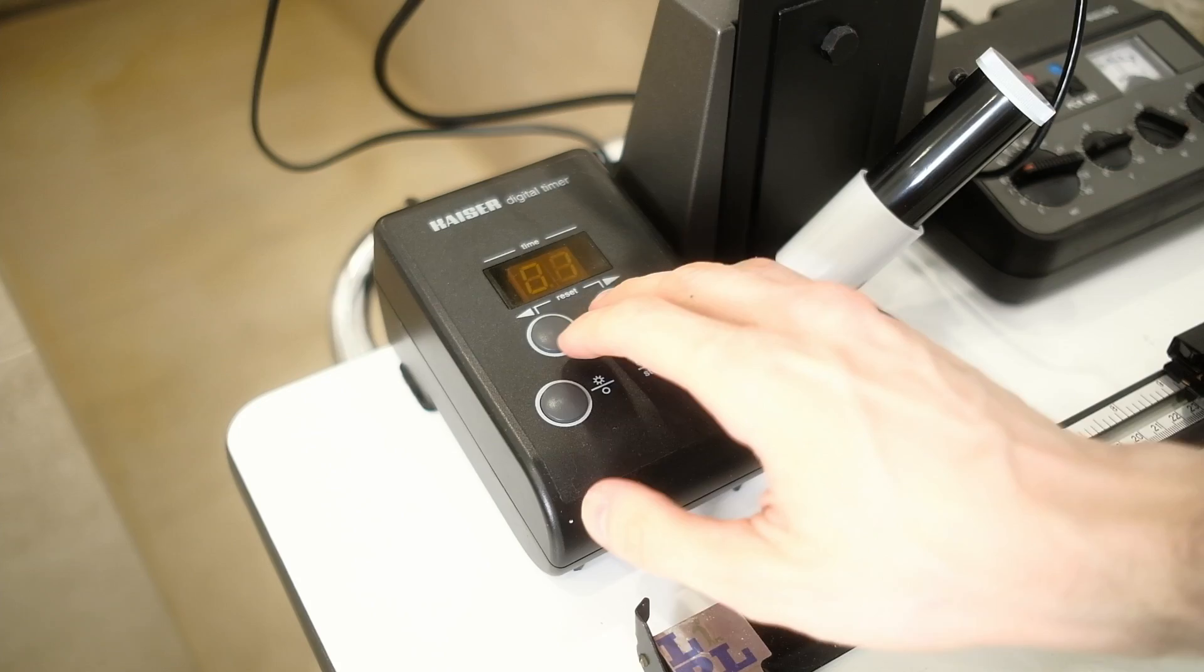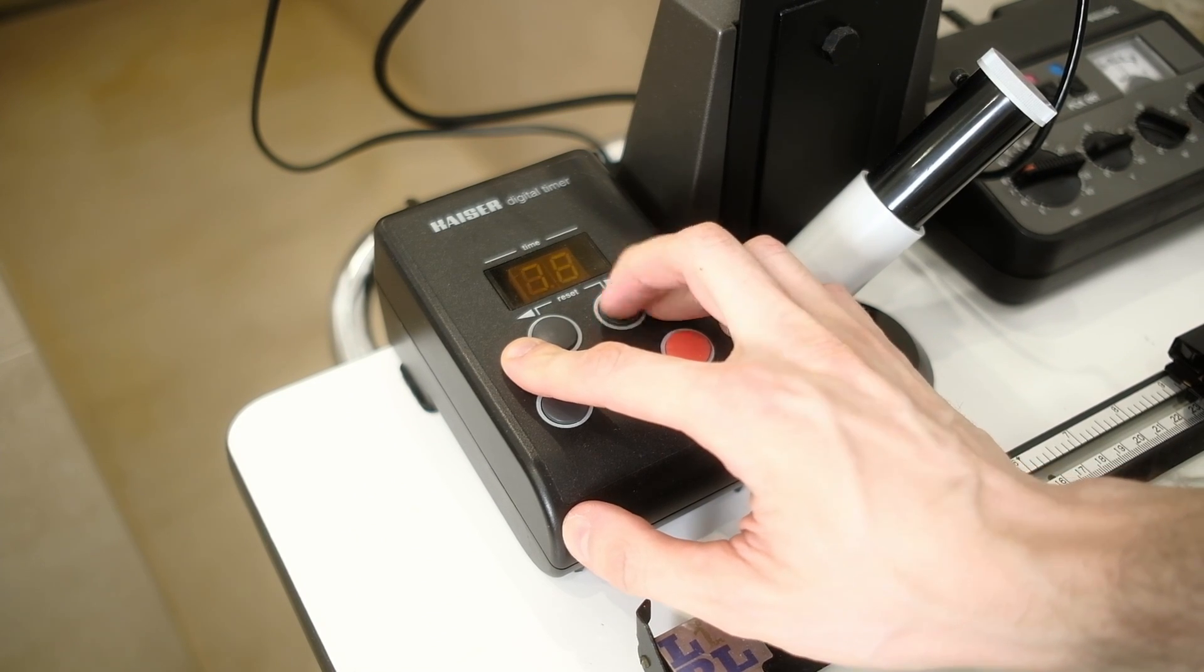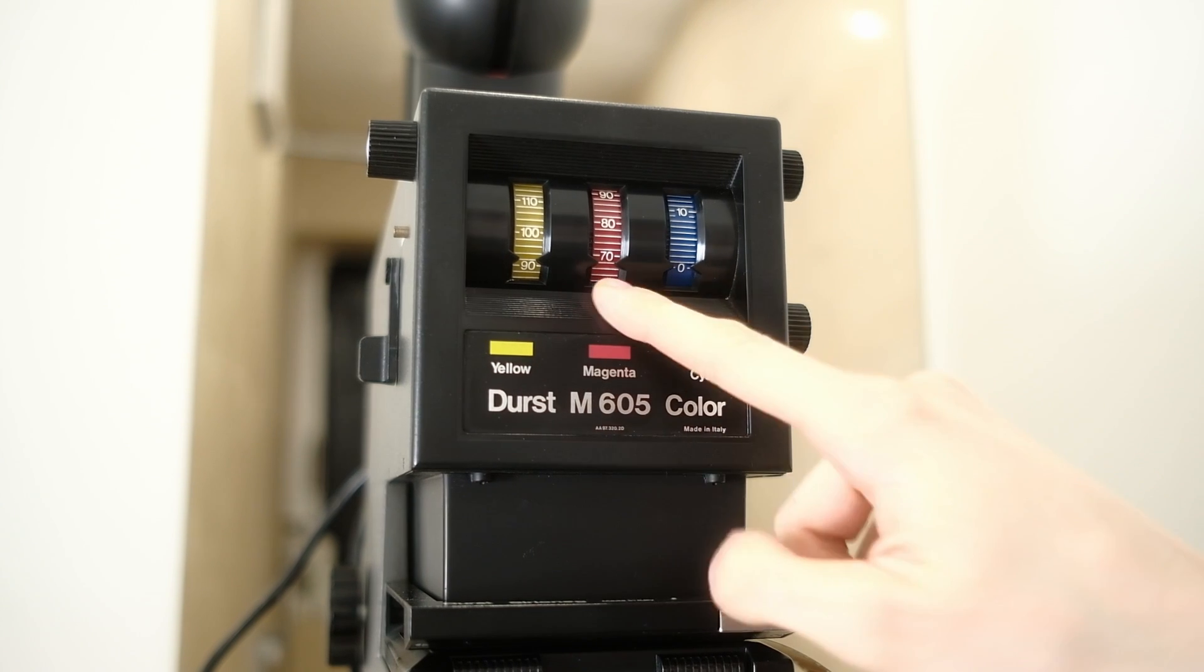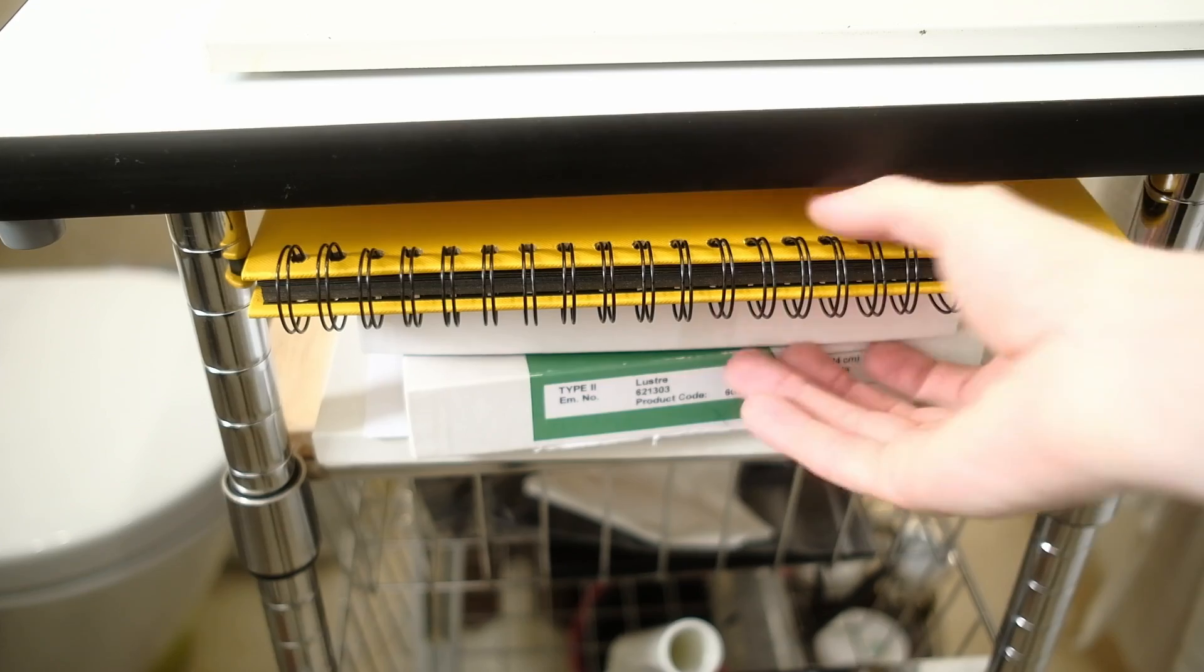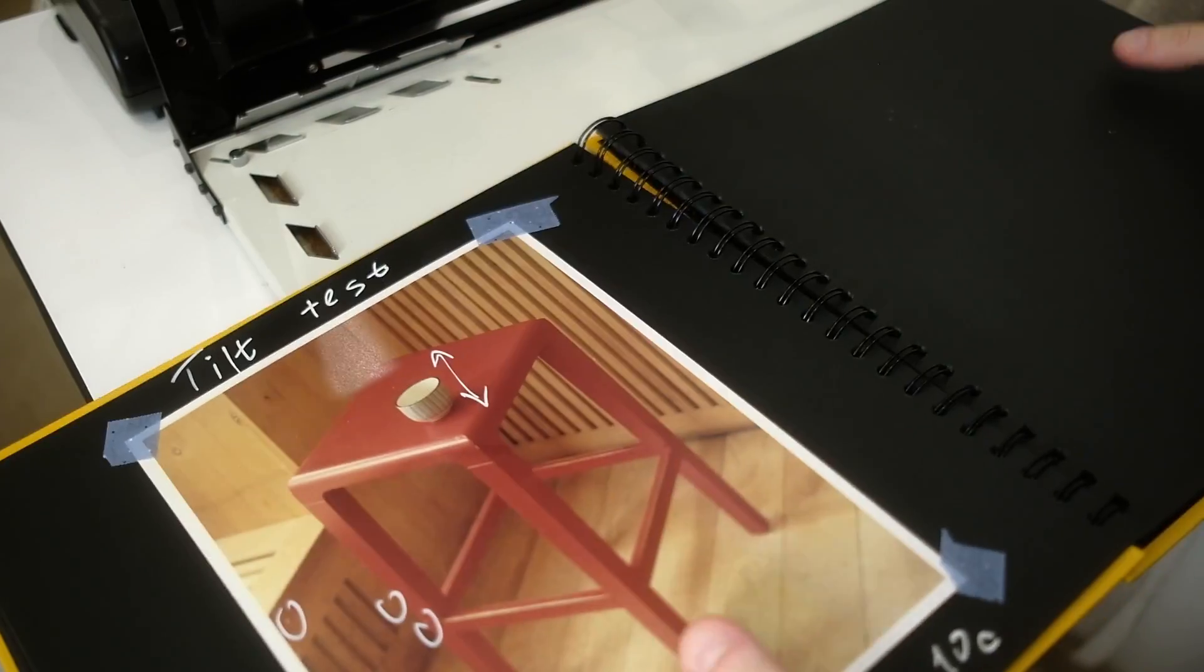But before we can discuss it, let's transfer 7.5 seconds to my timer and check what settings we have on the photo head. I have a magenta channel which is 10 points lower because of problems with the color calibrator gain. Let's put all the settings I measured in my lab book.